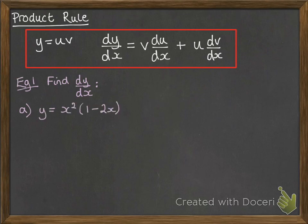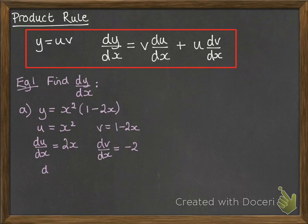We're going to find dy by dx on this one. So u is x squared and v is 1 minus 2x, the two things that got multiplied together to make y. Differentiate each of them. So du/dx is 2x and dv/dx is minus 2. So to find dy by dx, we need to do the derivative of the first function times the original of the second plus the derivative of the second function times the original of the first.